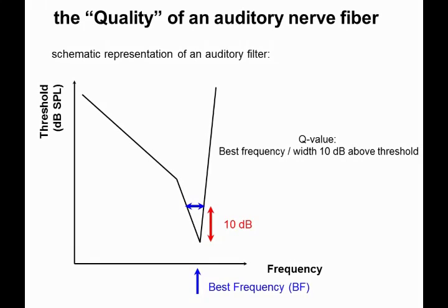For us, both frequency and time resolution are important. We've talked a lot about frequency resolution, but you also need very precise time resolution. Think about binaural hearing — we haven't talked about that yet — but it turns out you can measure timing in the range of microseconds. If you need microsecond precision, you actually need filters that are quite broad; otherwise you lose the temporal precision.